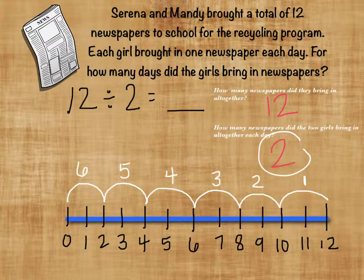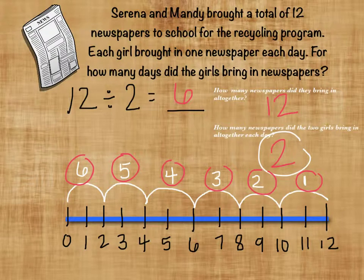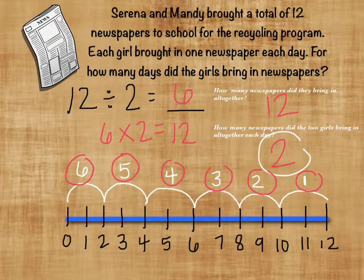How many jumps did we have all together? Look back and count: 1, 2, 3, 4, 5, 6. So how many days did they bring in 2 newspapers? They brought them in for 6 days. We can check that by looking at 6 times 2 equals 12.